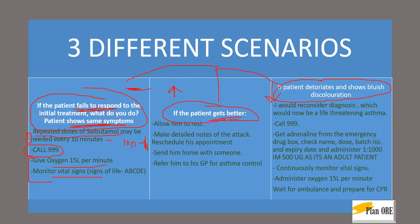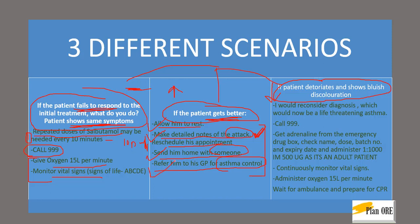If the patient gets better, you tell the examiner: 'I will allow him to rest on the chair and I will make detailed notes of the attack, and I will reschedule his dental appointment.' It is very important to make proper notes. You will then send the patient home with someone, and refer him to his GP for asthma control. This is similar to all medical scenarios: allow rest, send home with an escort, make detailed notes, and refer to the GP.